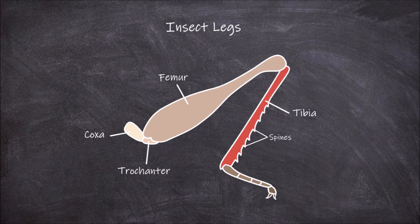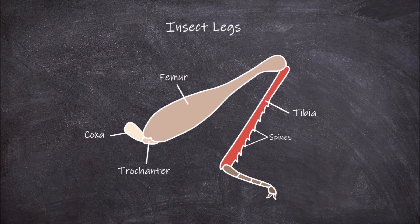In bees this is the segment of the leg where the pollen basket is found. It is also where the tympanum is located in members of the orthoptera. It articulates proximally with the femur and with the tarsus distally.